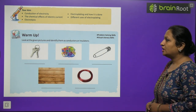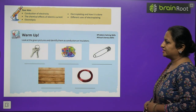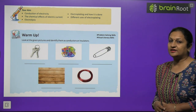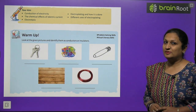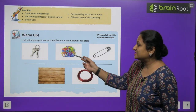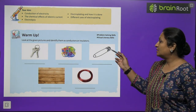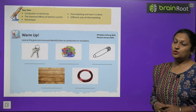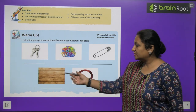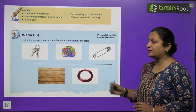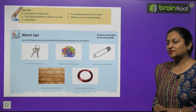Let's have a look at the warm-up activity. Look at the given picture and identify whether the items are conductors or insulators. You have to identify whether current will pass from a key, rubber bands, or a safety pin. You will also try with wood and copper wire, and then mention whether these are conductors or insulators.